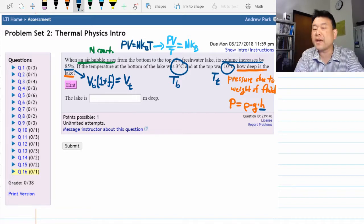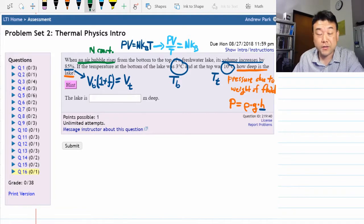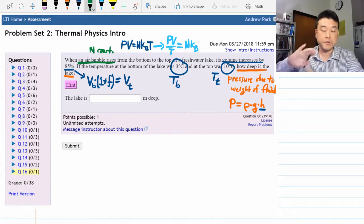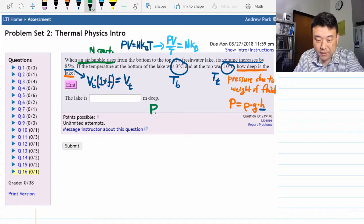What you need to figure out is that pressure at the top is going to be 1 atmosphere. It's exposed to the atmosphere, so 1 atmosphere is what you should figure out. So pressure at the top is equal to 1 atmosphere.